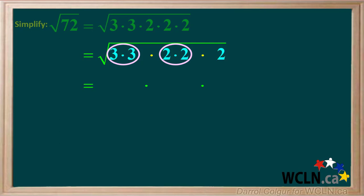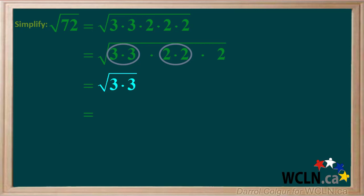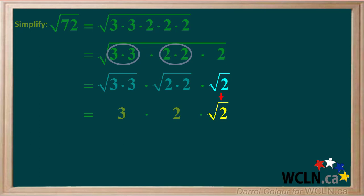Now we'll separate the single square root into three separate square roots: the square root of 3 times 3, times the square root of 2 times 2, times the square root of 2. The square root of 3 times 3 is the square root of 3 squared, which is simply 3. The square root of 2 times 2 is the square root of 2 squared, or simply 2. And the single 2 cannot be factored anymore, so the square root of 2 is just the square root of 2.